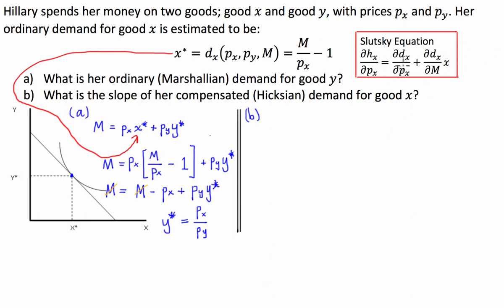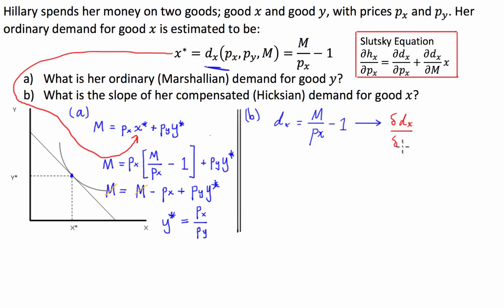Let's work out each parameter in our Slutsky equation, which relates Hicksian and Marshallian demand. First, we work out the change in Marshallian demand with respect to price by taking the first derivative of our demand function with respect to PX. Our function is: D(X) equals M divided by PX minus 1. Taking the derivative: δD(X)/δP(X) equals negative M over PX squared.